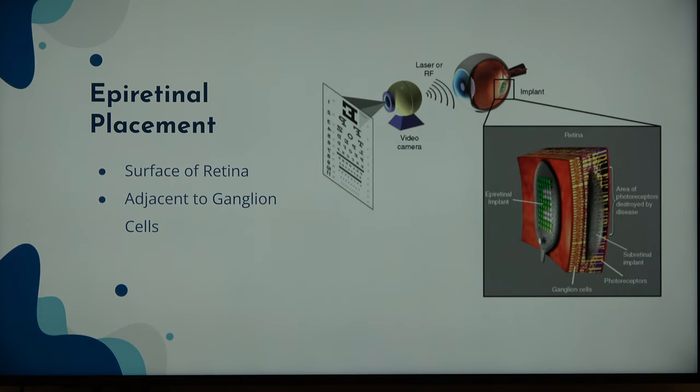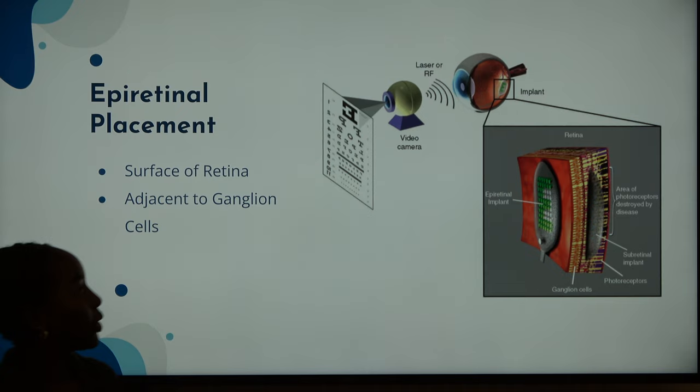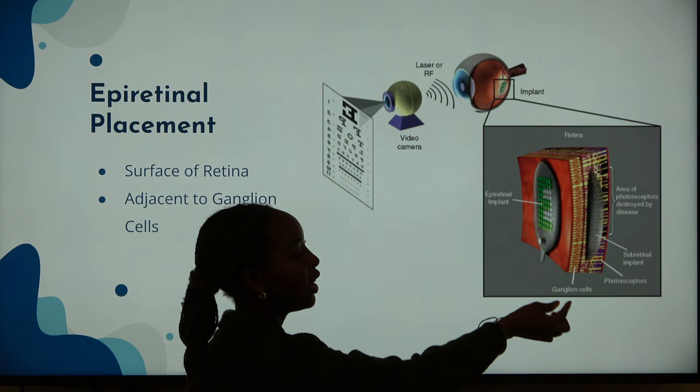Epiretinal implants are placed on the surface of the retina — kind of what you'd expect from the prefix 'epi.' These are adjacent to the ganglion cells. Here in red is the surface of the retina, this is the microchip — we'll get into that later — and these cell-like structures in yellow and red are the ganglion cells that are highlighted.